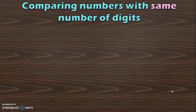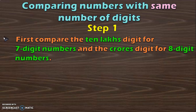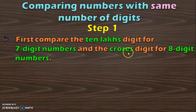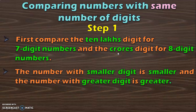Let us consider the cases where the number of digits are the same for comparing numbers. If you are considering two 7 digit numbers, you should start your comparison with the largest place value which is 10 lakhs. If you are considering two 8 digit numbers for comparison, you should start your comparison with the largest place value, which is crores. The number with the smaller digit is smaller and the number with the greater digit is greater.